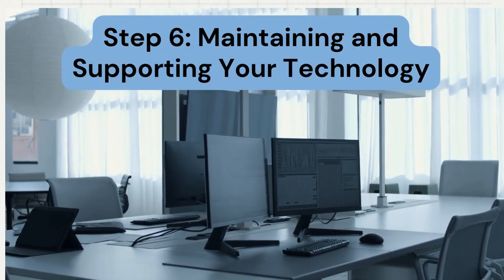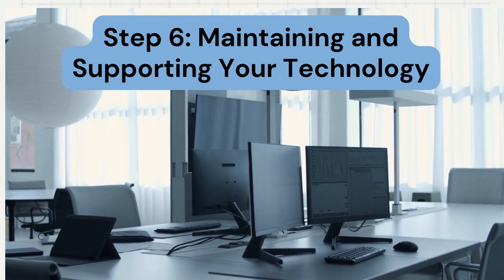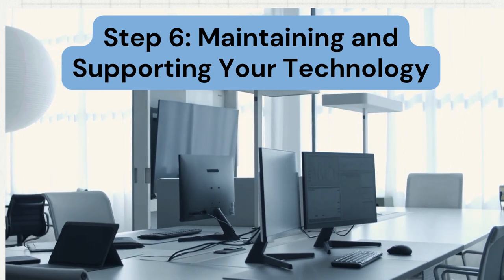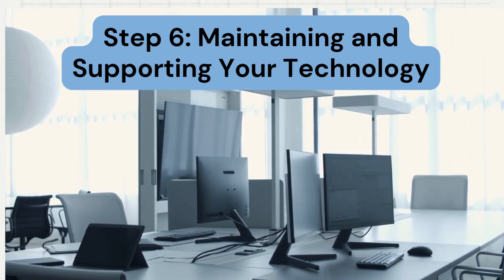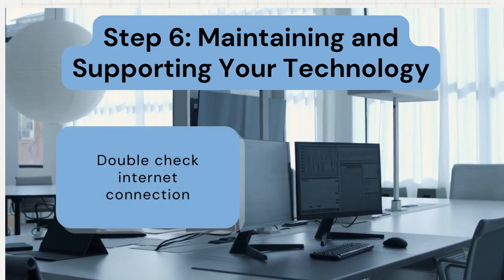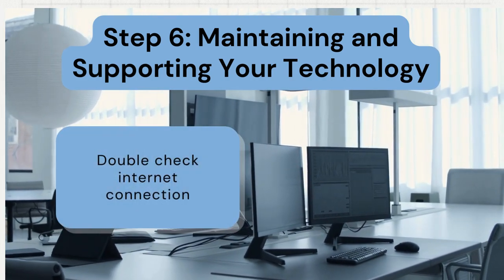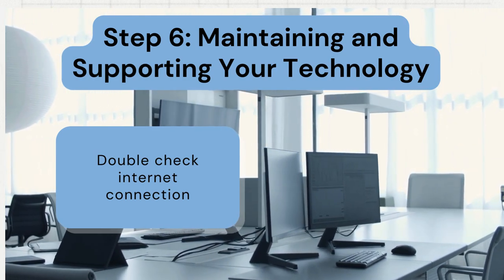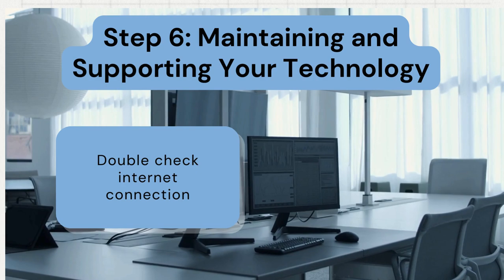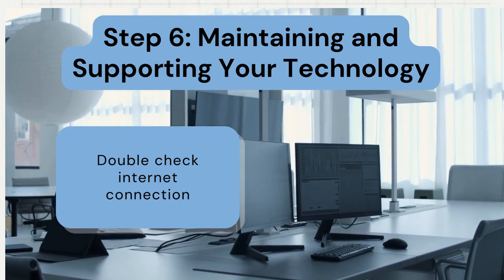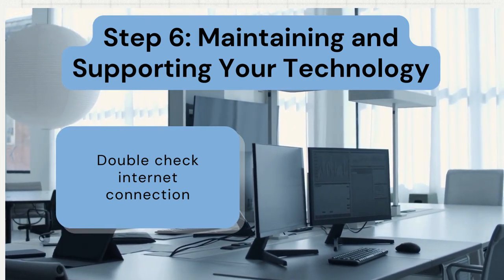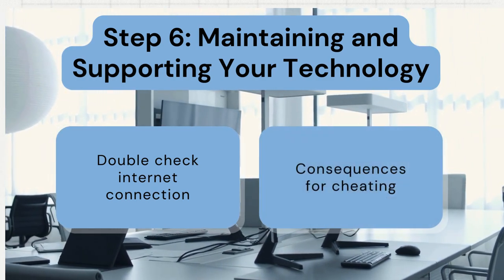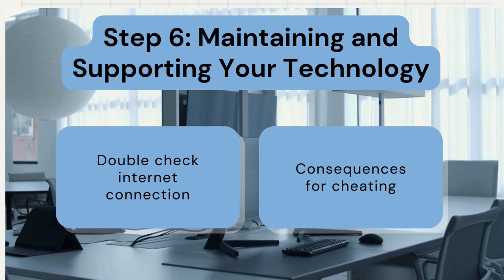The sixth step is called maintaining and supporting your technology. In this step I will go over how I will maintain and support the implementation of Blookit. One way is by having teachers double check that they have a stable internet connection before using Blookit. If they don't, they need to make a copy of the questions and create a game that does not require the internet, such as Jeopardy. Another way is by telling teachers to inform their students that if they are caught cheating there will be consequences.